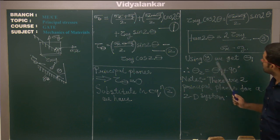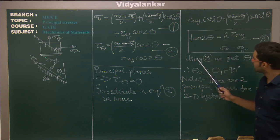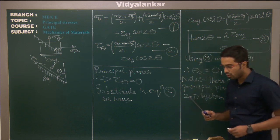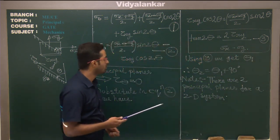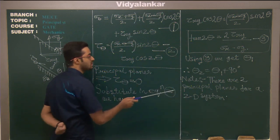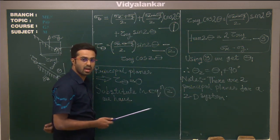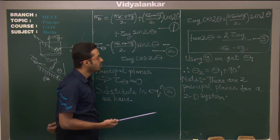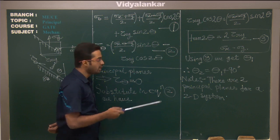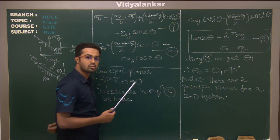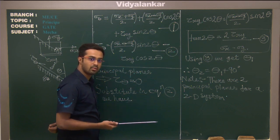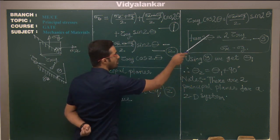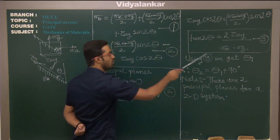Using equation three we get theta one. Now in a 2D system we are going to have two principal planes, and in a 3D system we are going to have three principal planes. One of the planes in a 2D system will be the plane where the normal stress value is maximum, and the other will be the plane where the normal stress value will be minimum. Theta one corresponds to one of the planes, which can be evaluated by this formula.